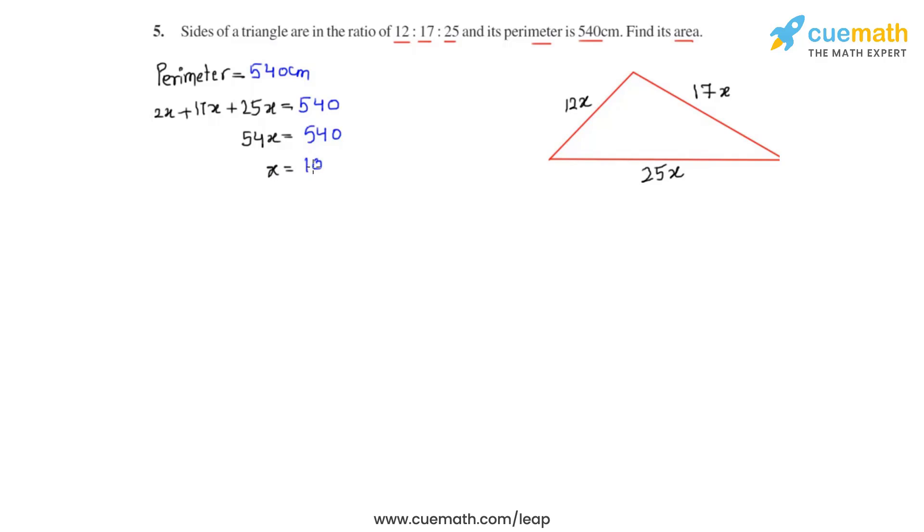That is the common ratio is 10. So we get the three sides to be 120 centimeters, 170 centimeters and 250 centimeters.